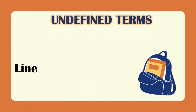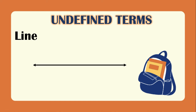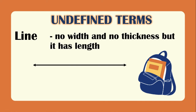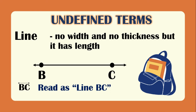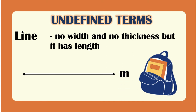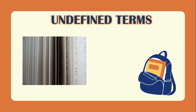The next undefined term is the line. A line has two-headed arrows, meaning it can be extended infinitely in both directions. It has no width or thickness but has length. A line through points B and C is called line BC, with a line symbol on top. A line can also be named using a small letter, for example line M. A real-life example is the edge of a page of a book.